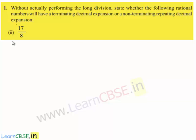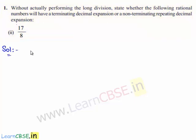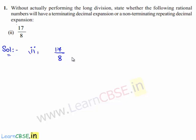Now we shall move on to the second bit in the question. We need to find whether the decimal expansion for the given rational number 17 upon 8 is a terminating decimal expansion or a non-terminating repeating decimal expansion. To find this, we shall first write the denominator as a product of its prime factors. Therefore, we shall factorize the denominator 8.